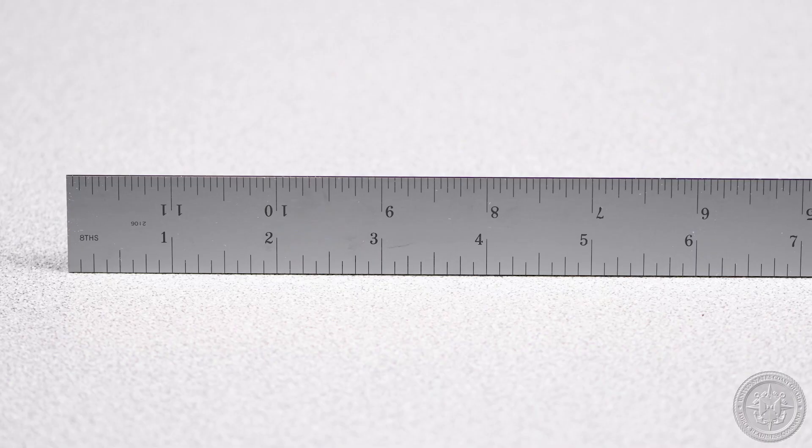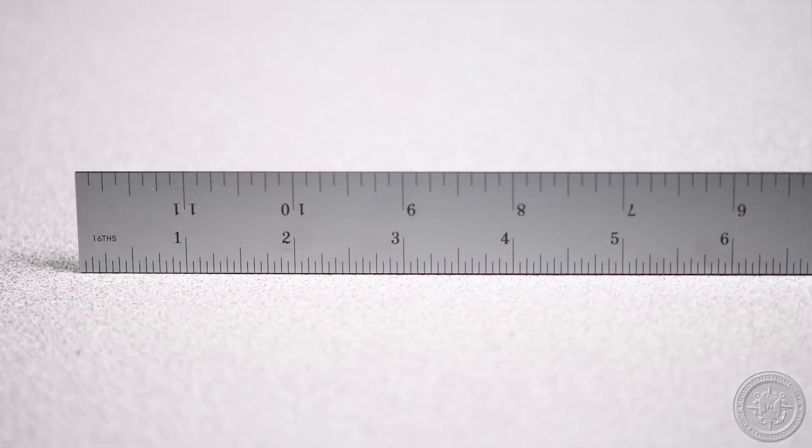A standard ruler has an eighth scale and a sixteenth scale. An eighth scale is broken up into one eighths and a sixteenth scale is broken up into one sixteenths.